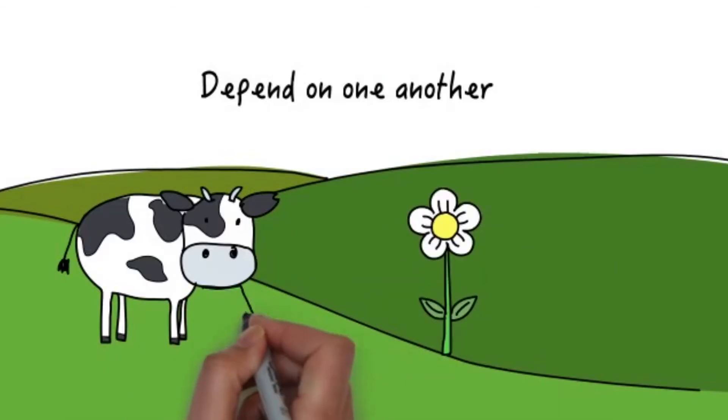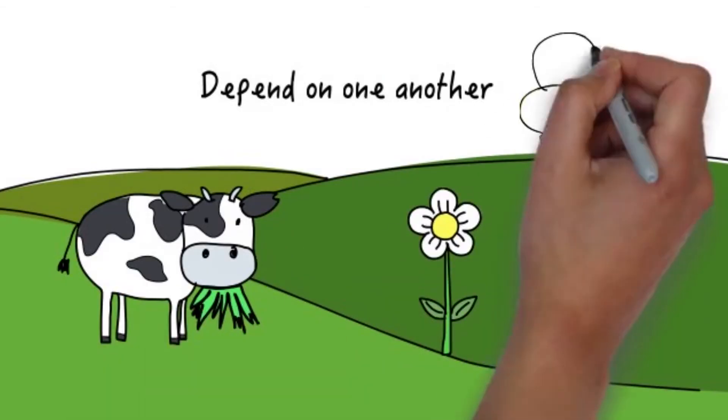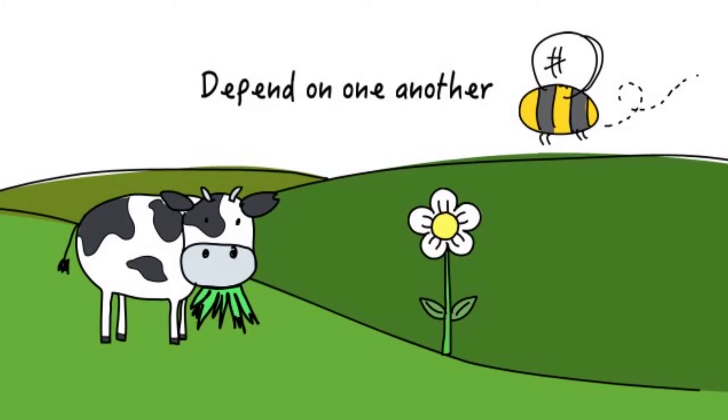For example, cows need plants for food and plants need bees for reproduction. Almost all organisms rely on the sun to get energy in one way or another.